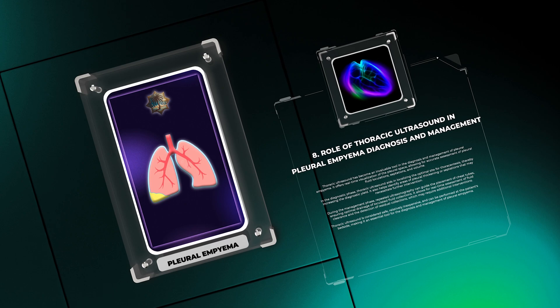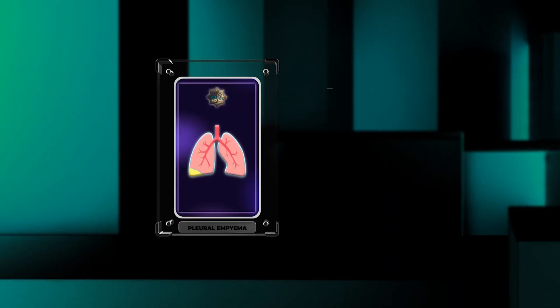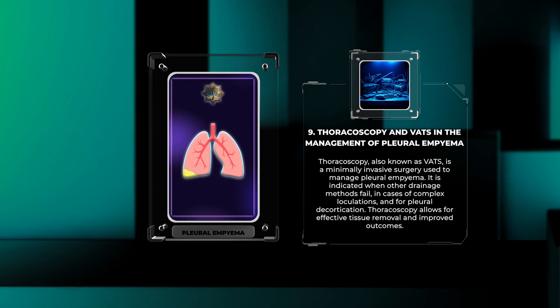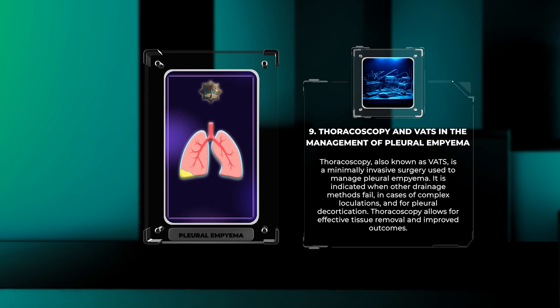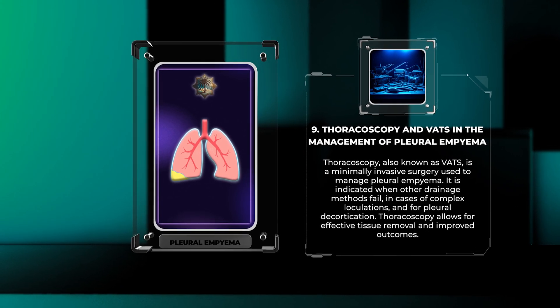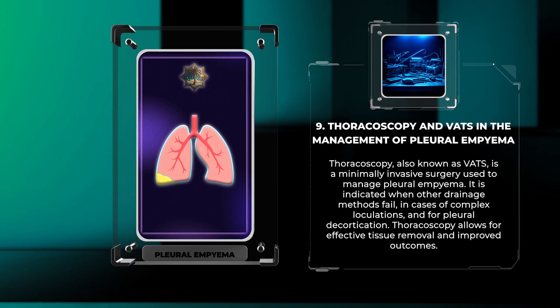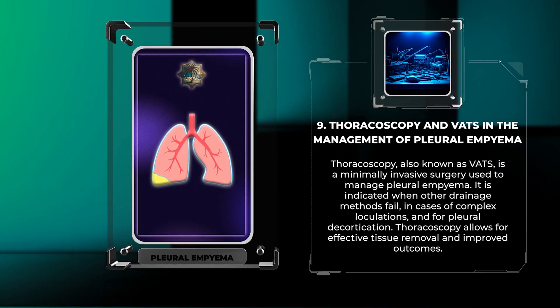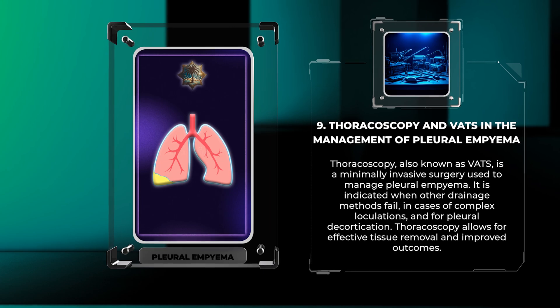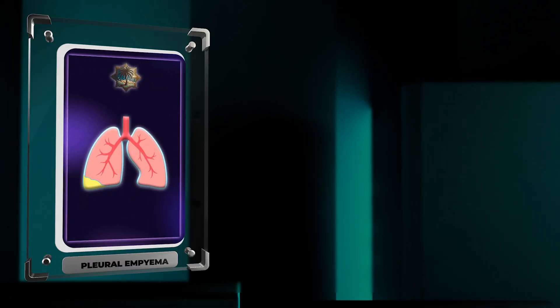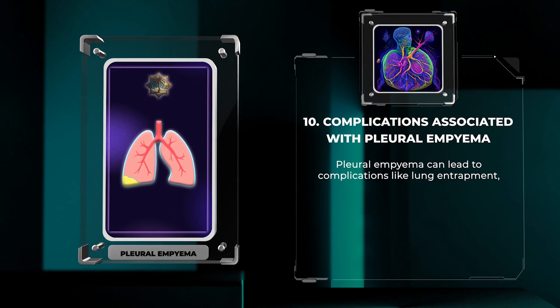Thoracoscopy, also known as VATS (video-assisted thoracoscopic surgery), is a minimally invasive surgery used to manage pleural empyema. It is indicated when other drainage methods fail, in cases of complex loculations, and for pleural decortication. Thoracoscopy allows for effective tissue removal and improved outcomes.